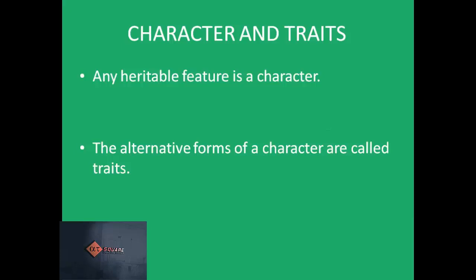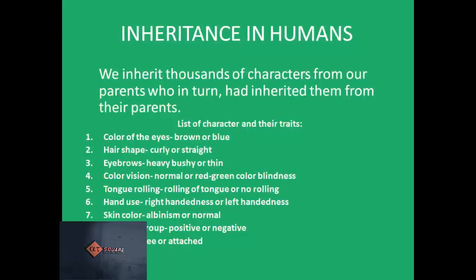Now we discuss the two terms — character and traits — that are often used as synonyms. However, they differ. Any heritable feature is a character. The alternate forms of a character are called traits. For example, eye color is the character of an organism, while blue, brown and hazel are its traits.